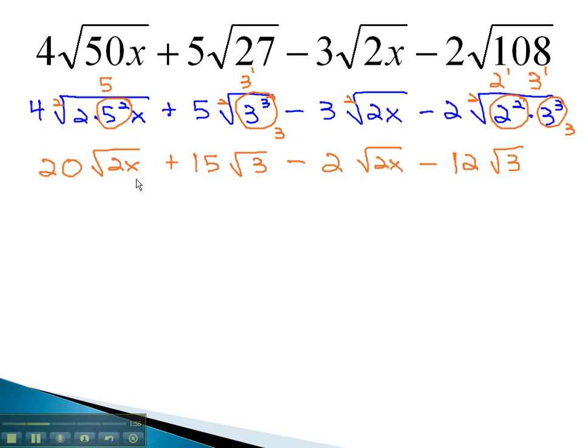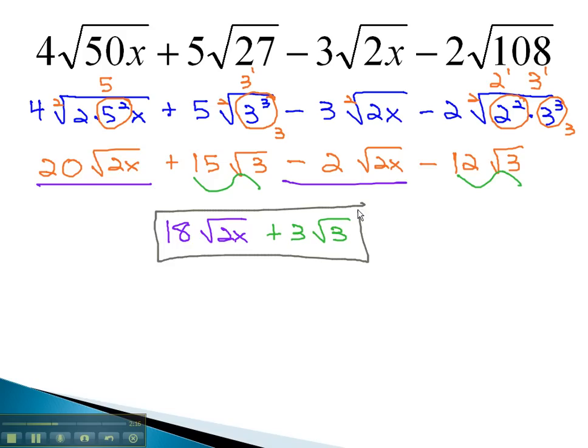We're now ready to combine like radicals. Square root of 2x makes like radicals, and 20 minus 2 means we have 18 of the square roots of 2x. We also have like radicals on the root 3, and 15 minus 12 is positive 3 of the square roots of 3. This is our final solution.